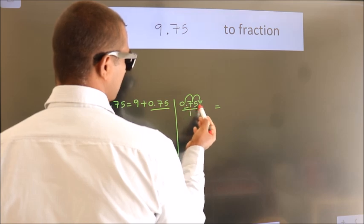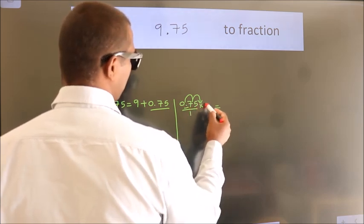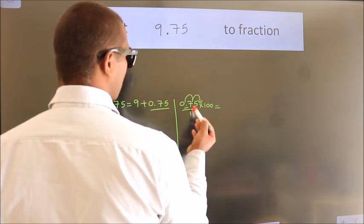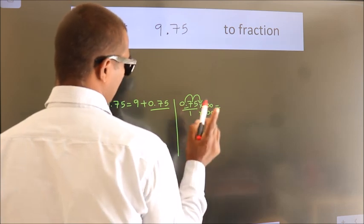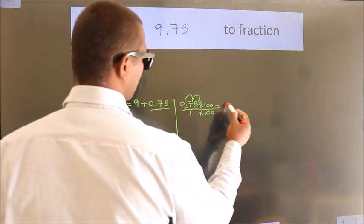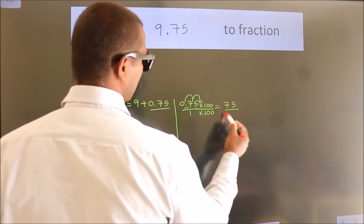To move this decimal after 2 numbers, multiply it with 100. Whatever you are multiplying in the numerator, in the denominator also do the same. Next, 0.75 into 100 is 75, 1 into 100 is 100.